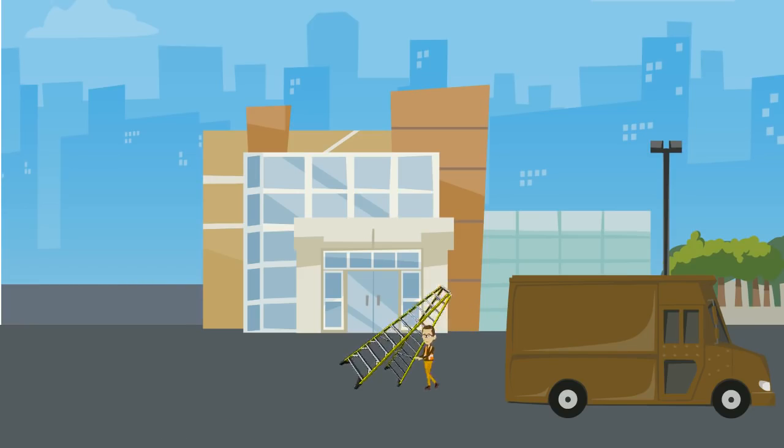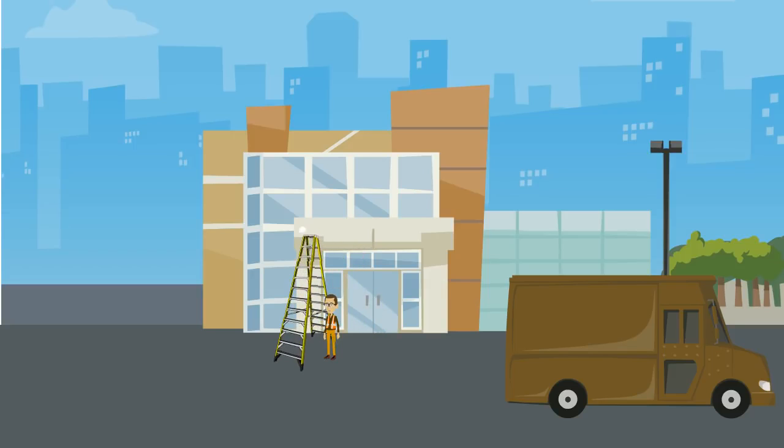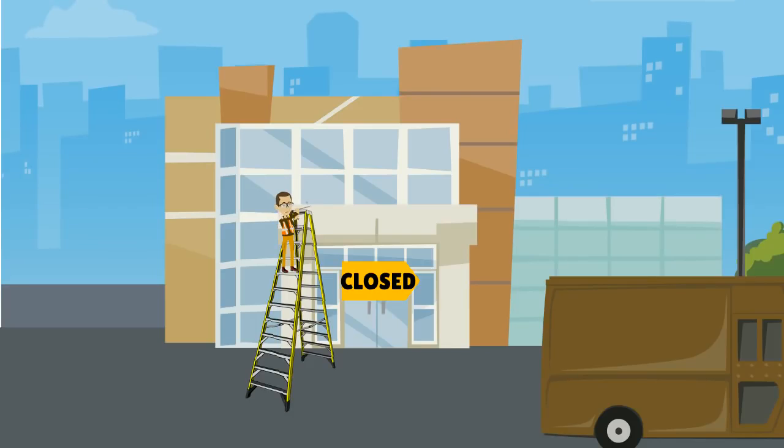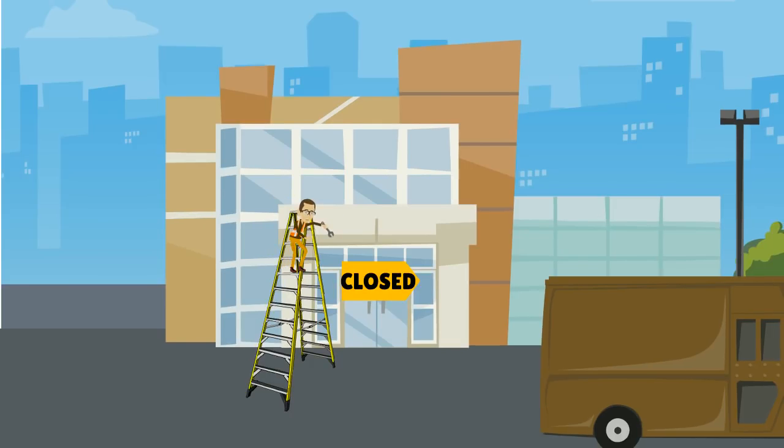Place a step ladder at right angles to the work, with either the front or back of the steps facing the work. When working from a step ladder, keep your hips within the two vertical rails. Reaching too far to the left or right could cause the ladder to topple.